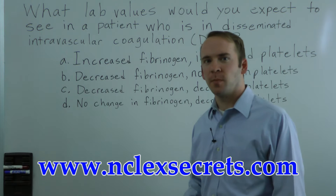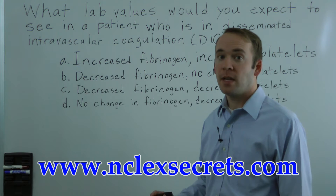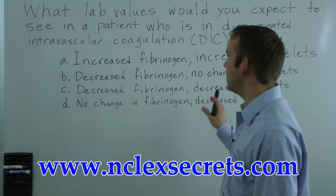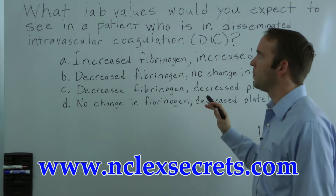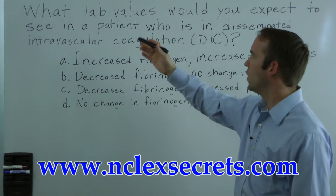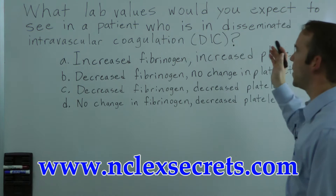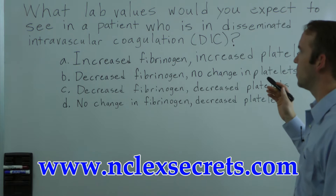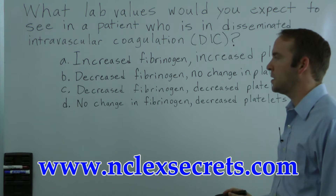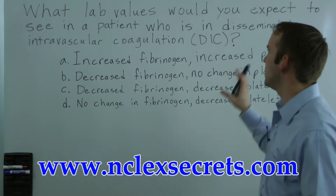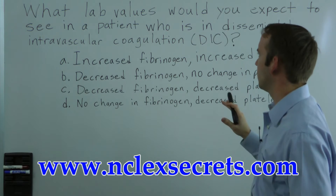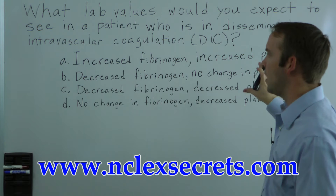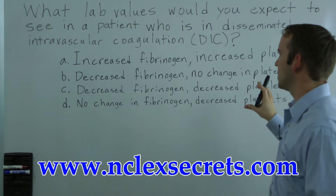Let's take a look at how to solve a possible problem that you may not know the answer to, just by using some of the clues that are in the answer choices. Here we have a question: what lab values would you expect to see in a patient who is in disseminated intravascular coagulation, or DIC? But the goal is not to try to answer that particular question — let's skip to the answer choices and see what sort of information they contain.